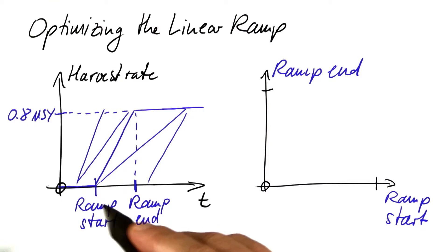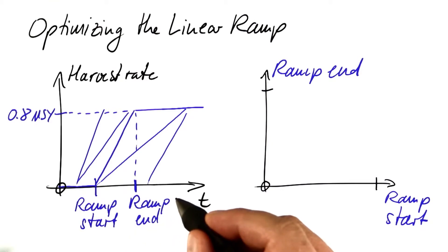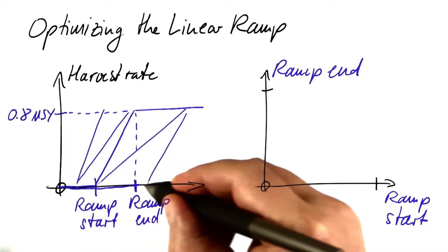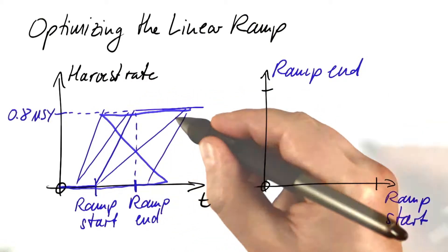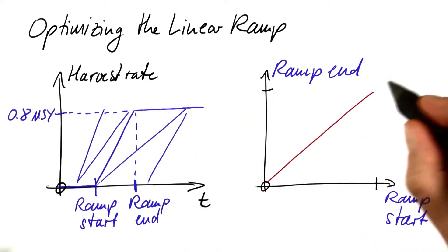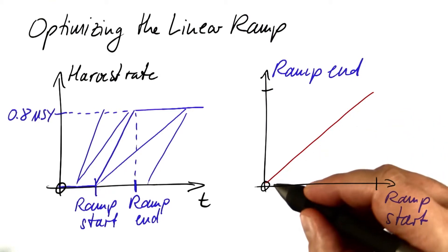Not every combination of these two parameters makes sense. We do not want the start time to be larger than the end time. That won't really work. So in this diagram, the combinations below the diagonal are forbidden.